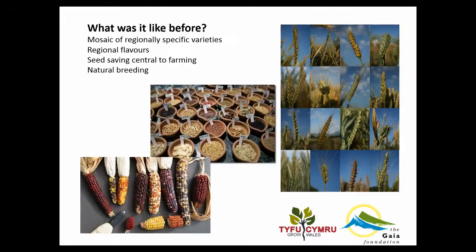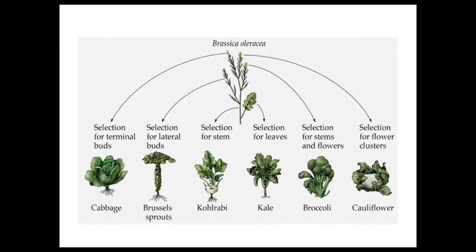Seed saving was always really central to farming. In the UK now a lot of us order seeds from elsewhere, but for hundreds and thousands of years seed saving has been central to farming — you can't grow crops without saving seeds. People would have done that on farm. There's been natural breeding of food crops for hundreds and thousands of years; most food crops aren't wild plants but varieties selected by communities over time.